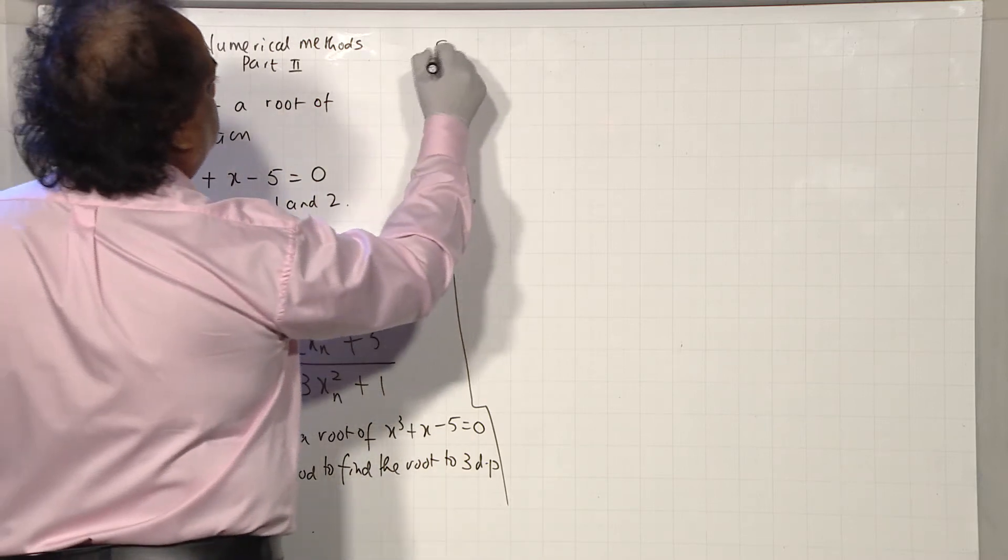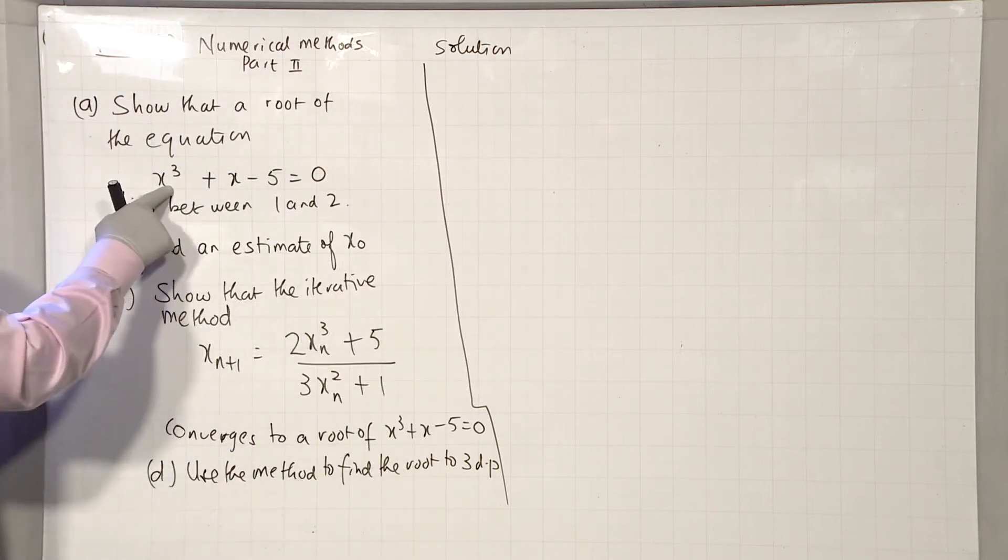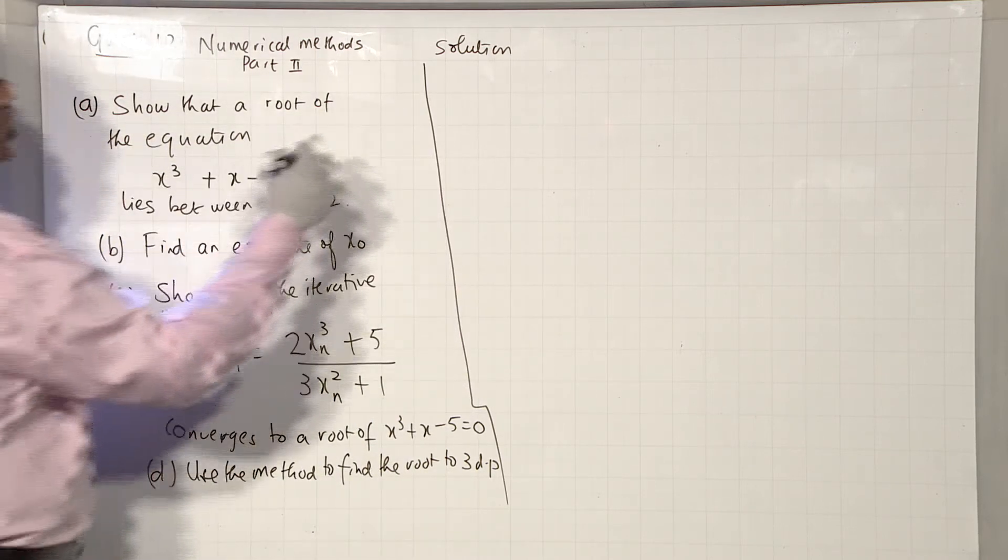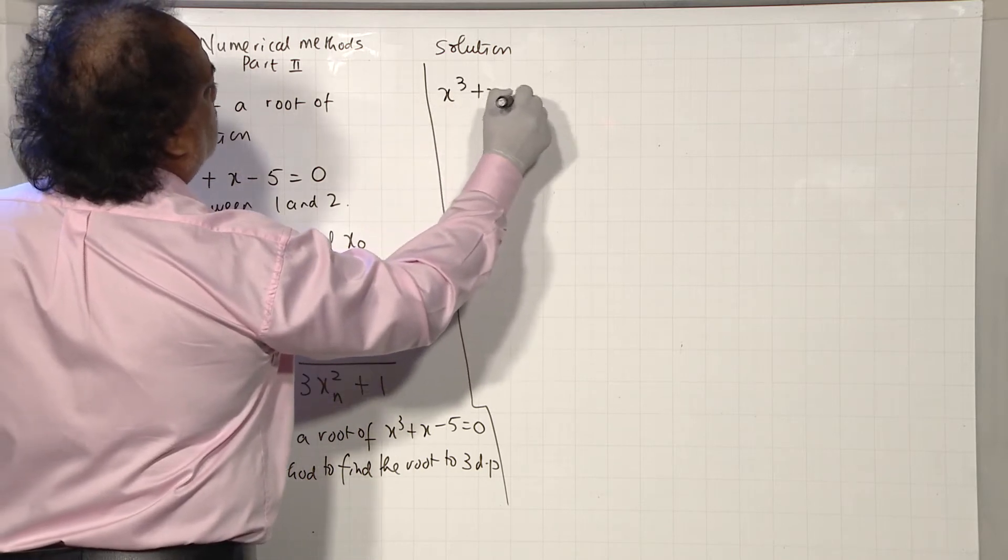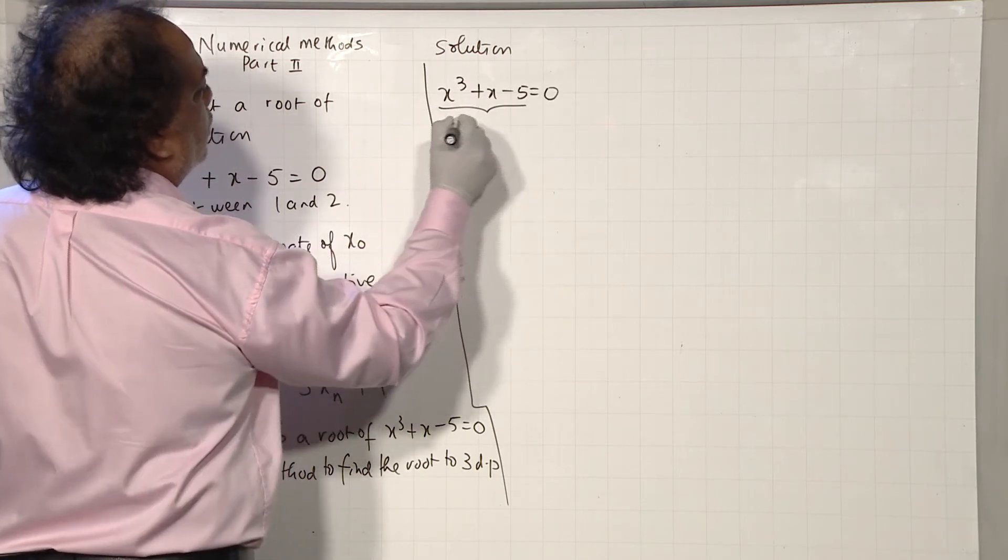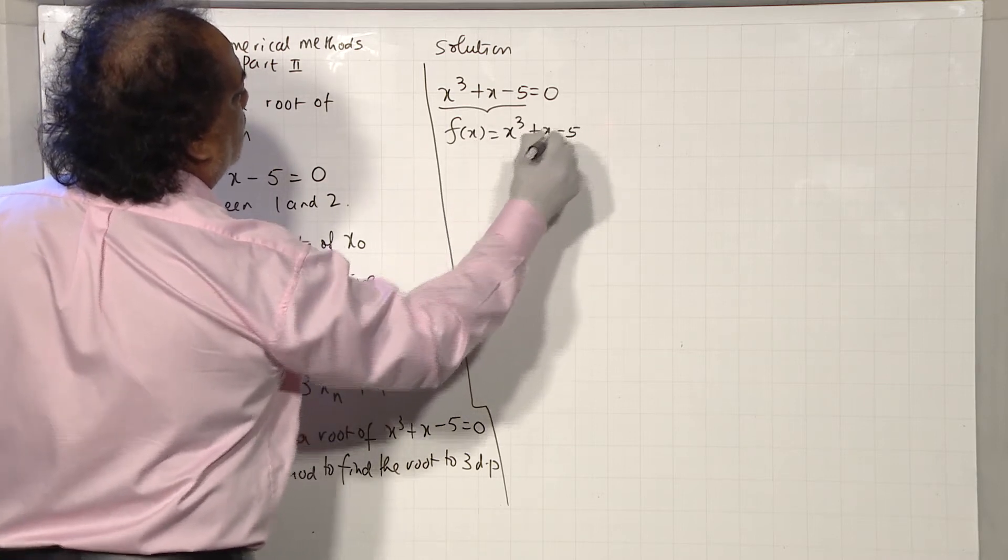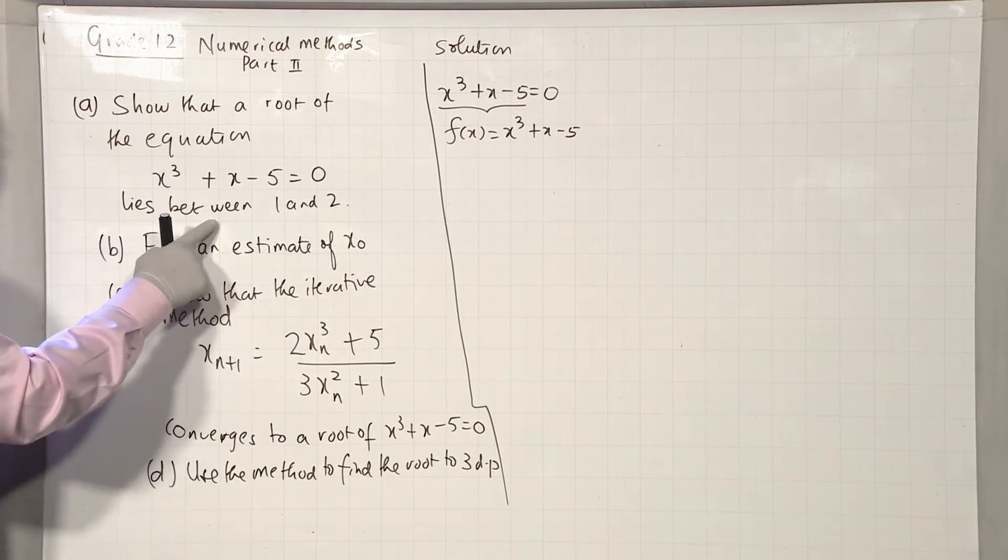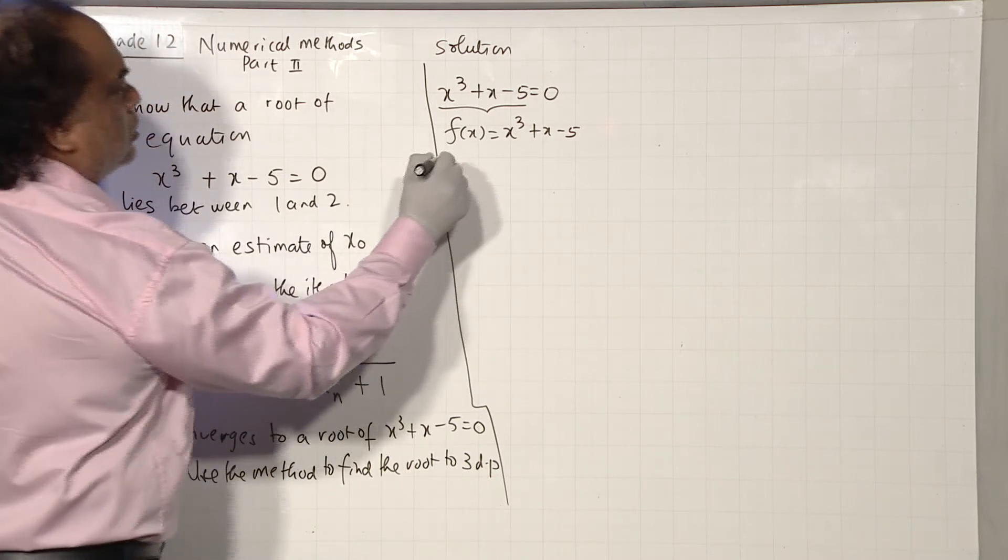Now, solution. The equation must be written in the form f(x) equal to 0. It's already in that form, so I'm going to take f(x) to be x³ plus x minus 5.